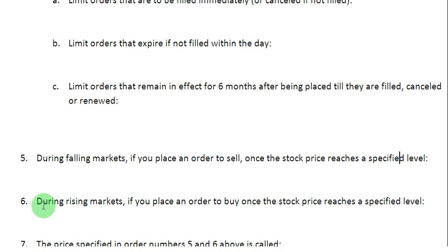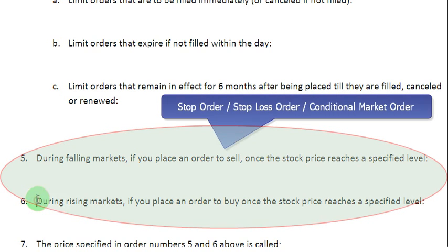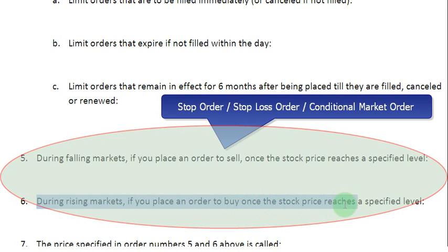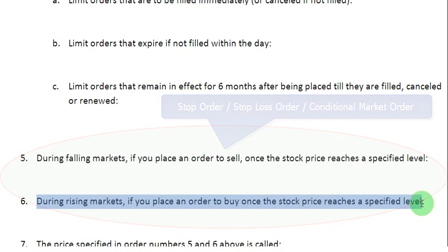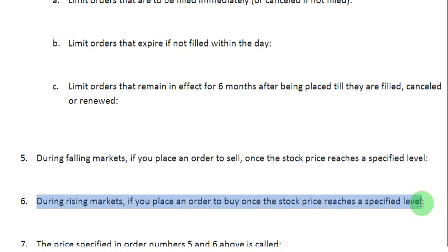In a similar vein, if you are on the buying side and want to buy a share for as low a price as possible, but you encounter rising market conditions, you can place an order to buy once the stock price reaches a specified level. You want to buy at the cheapest price possible, but if the price keeps rising and you do not want to wait indefinitely — because the price may go beyond your reach — you would place a stop order or stop loss order to buy.